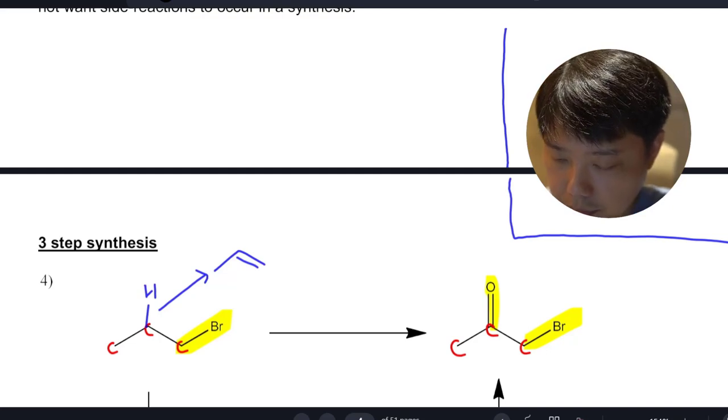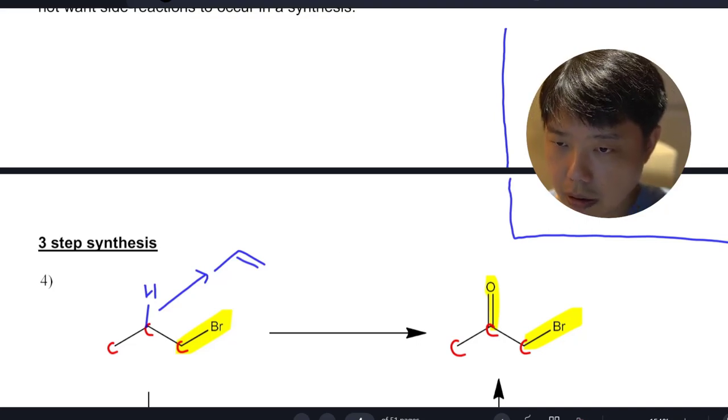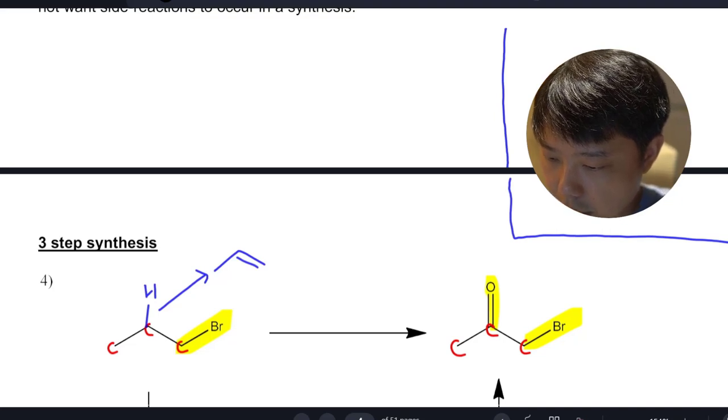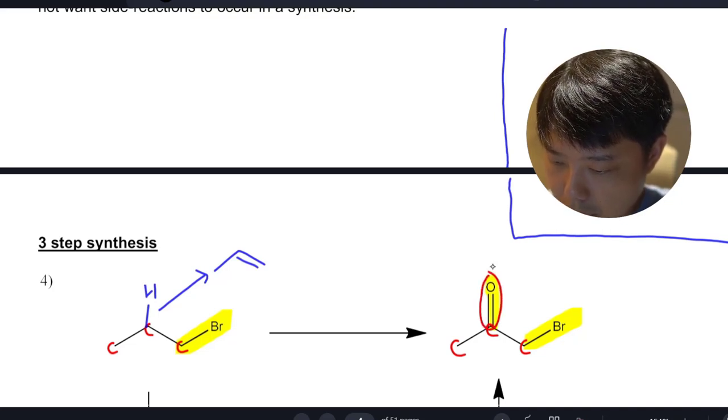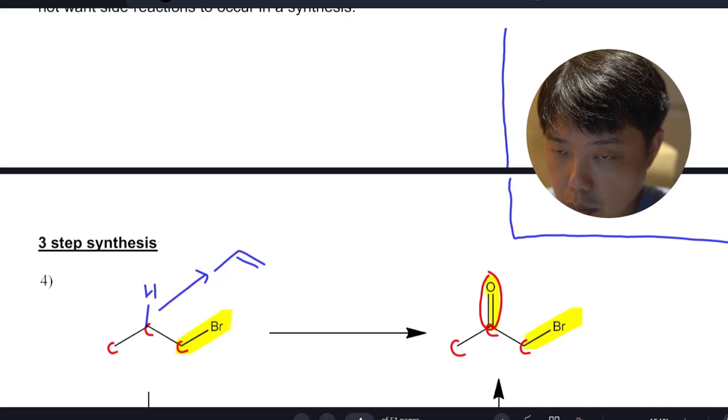And we get our propene. Once you get your propene, the next thing you're going to ask yourself is, how am I going to add this functional group? This carbonyl functional group most likely comes from the alcohol functional group.